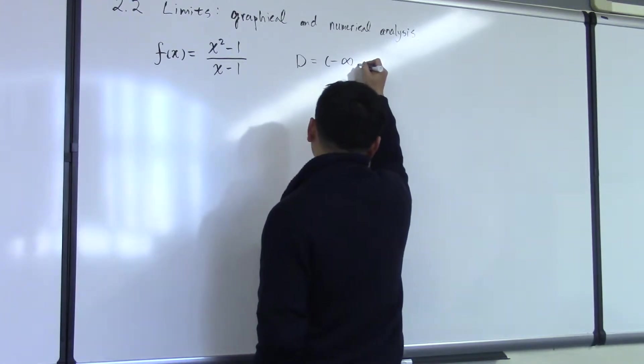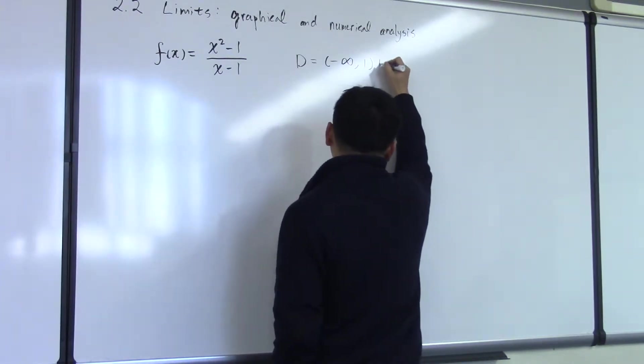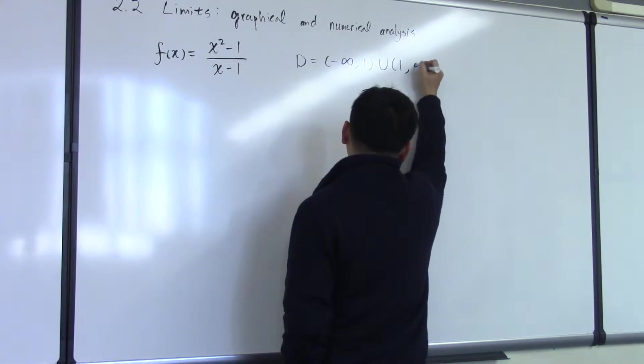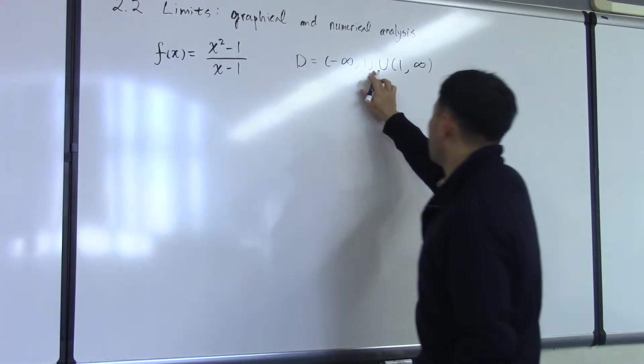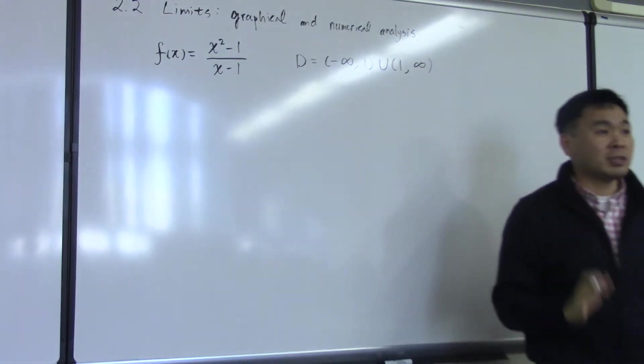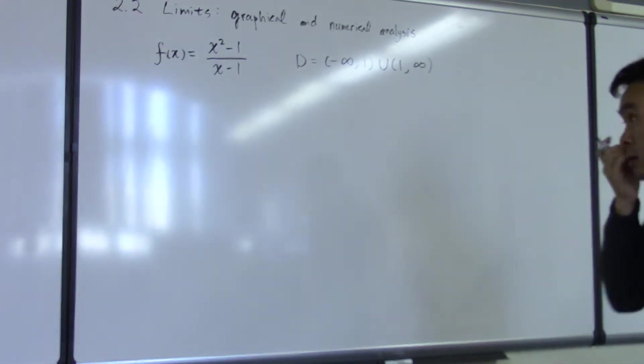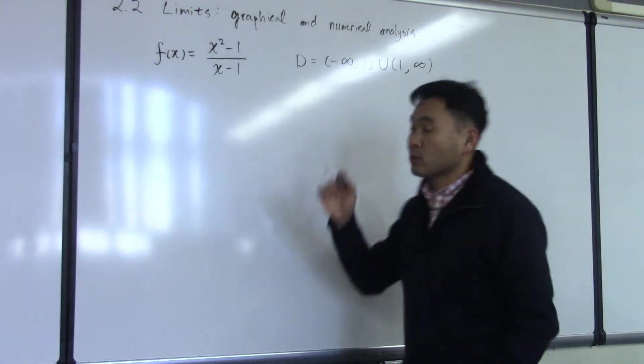So it's like negative infinity to 1, or 1 through infinity. But as you can see here, I'm using round brackets, meaning that 1 is not included. So that's the domain of this function.